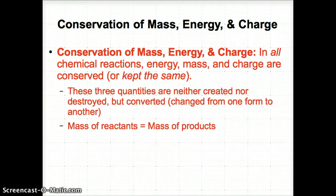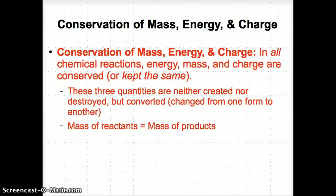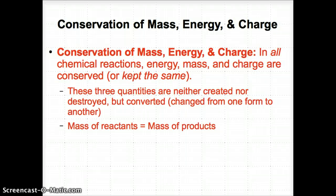First, let's talk about the conservation of mass, energy, and charge. This law states one fundamental thing: in all chemical reactions, energy, mass, and charge are conserved — meaning they're kept the same. These three quantities are neither created nor destroyed, but instead they're converted from one form to another. So mass, energy, and charge stay the same on both the products and the reactant side.